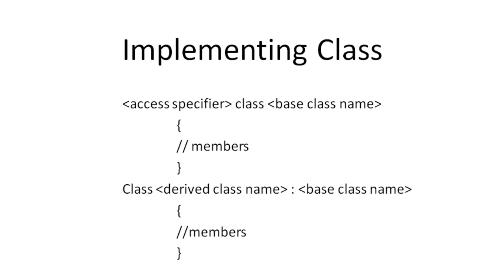A class in C# that inherits from another class is called a derived or child class, while the class from which attributes are derived is called a base or parent class. Each instance of a derived class includes its own attributes and all the attributes of the base class. Therefore, the derived class has a large set of attributes.